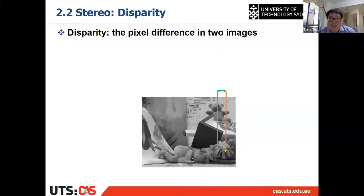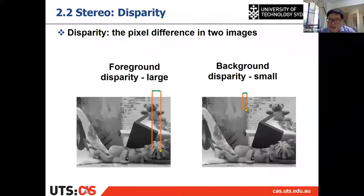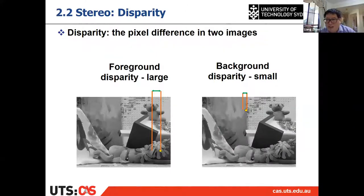The answer is: if you have an object close to the camera, it has a larger disparity. So larger disparity means shorter depth or shorter distance, and smaller disparity means longer distance or depth.